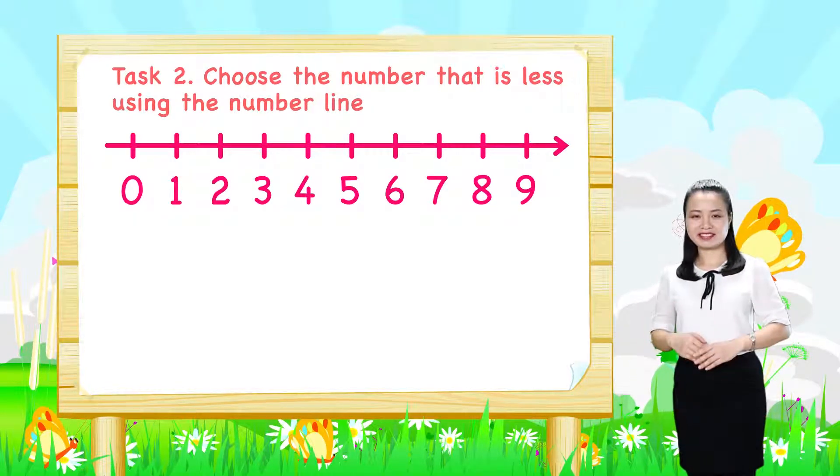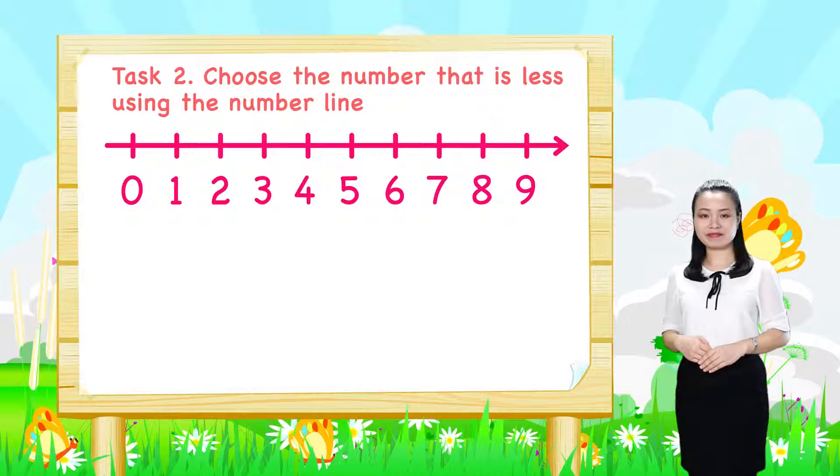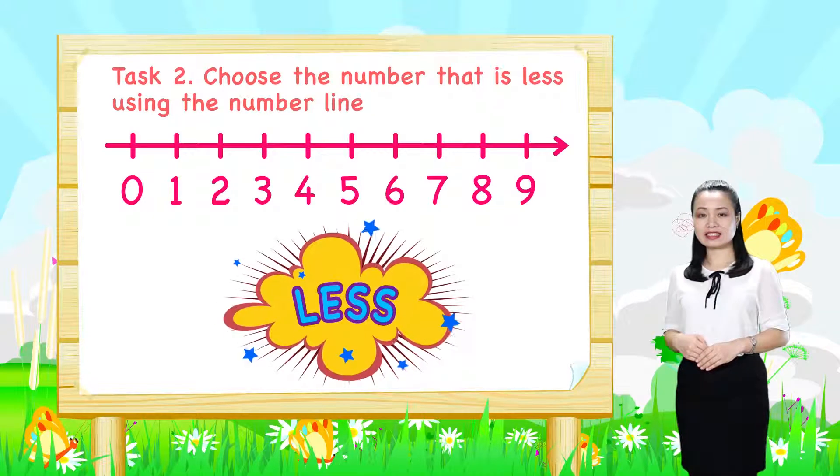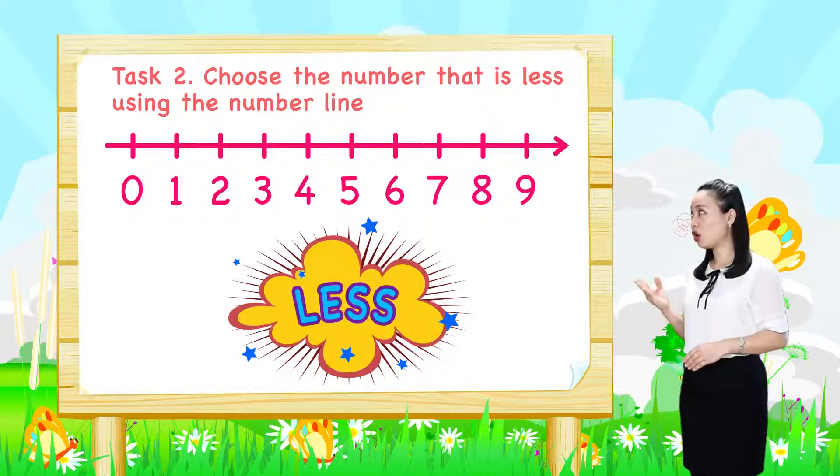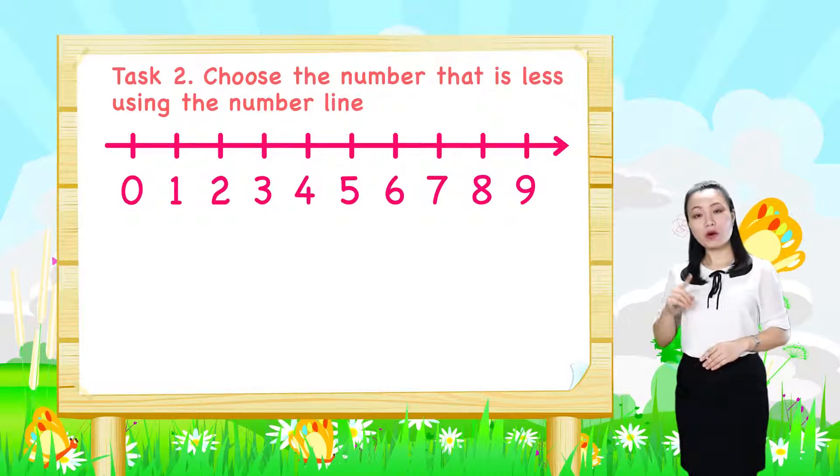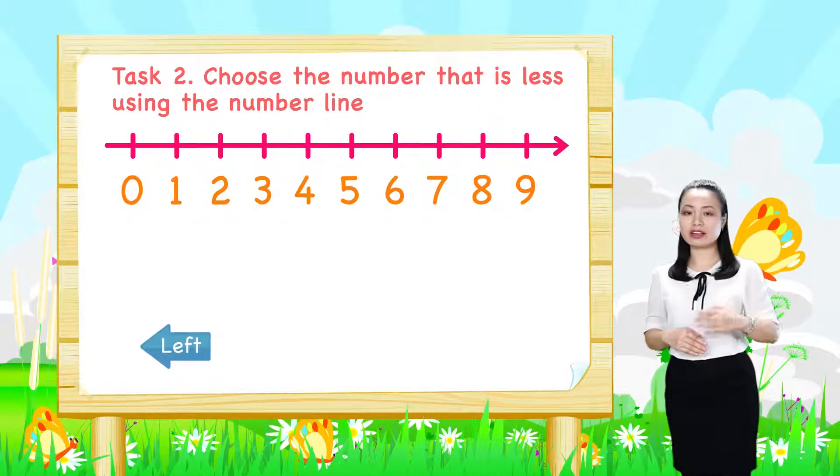Now, let's find the answers together. To choose a number that is less, first look at the number line, then decide which number is to the left of the other number.